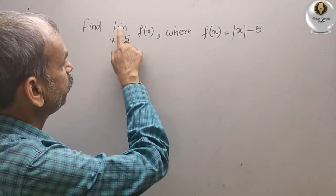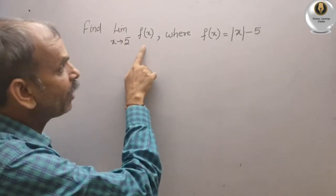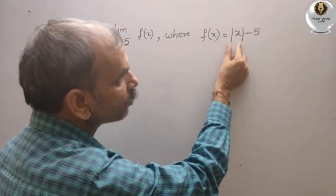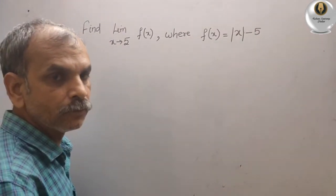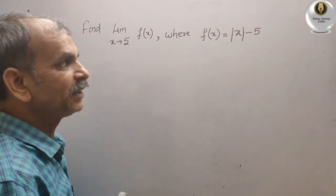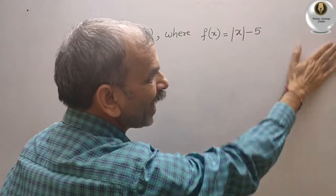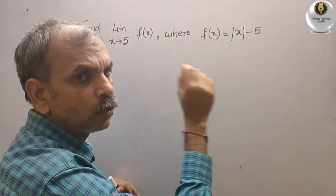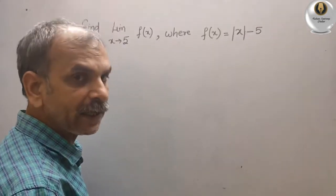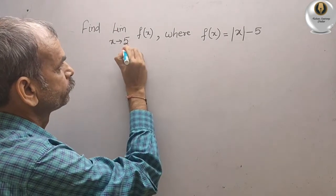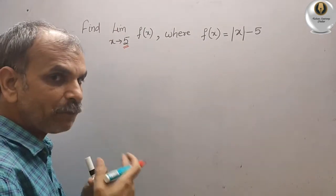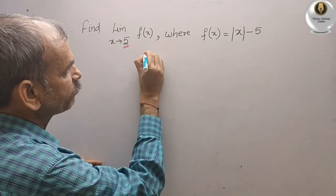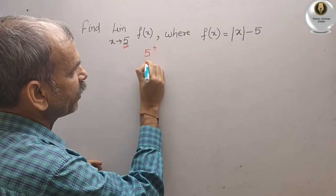Your question is limit x tends to 5 of f(x) where f(x) is equal to modulus of x minus 5. Now understand this, here they have not given any condition, no condition is there. So what we will take? We will take the condition from here, that means 5 plus and 5 minus. So there are two conditions, that is 5 plus and 5 minus.